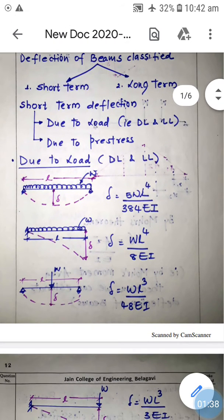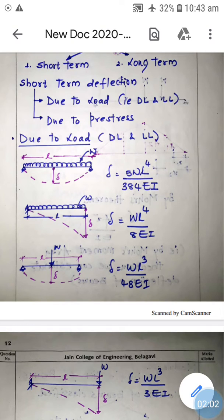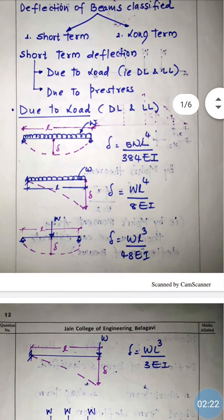For dead load and live load there are different types of beams with different end conditions and load intensities. First, for a simply supported beam with UDL over span L, the deflection will always be maximum at mid-span. These are simple beams, not prestressed concrete beams. The maximum deflection can be calculated using the equation: δ = 5WL⁴ / 384EI.